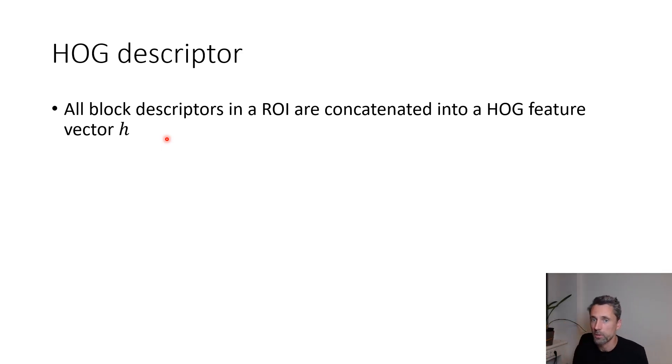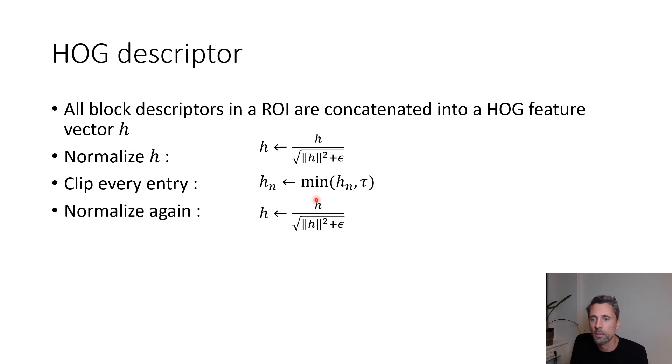Now the final HOG descriptor will be a concatenation of all block descriptors, even the overlapping ones, within the region of interest. All block descriptors are concatenated into a HOG feature, and this HOG feature vector h is again normalized like we saw before. Then the authors do something that helped in the performance - don't ask why, they just tried it and it worked. What we'll do with every entry of the HOG feature descriptor is clip it - large values are replaced by this hyperparameter tau - and then we'll normalize again like before. Again, the question is why do we have this epsilon here?